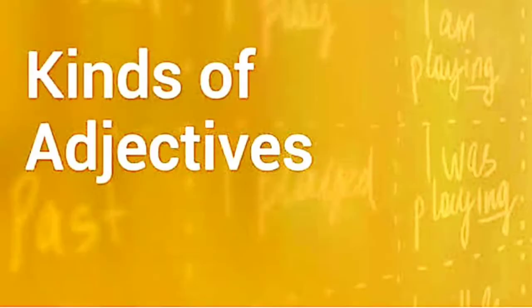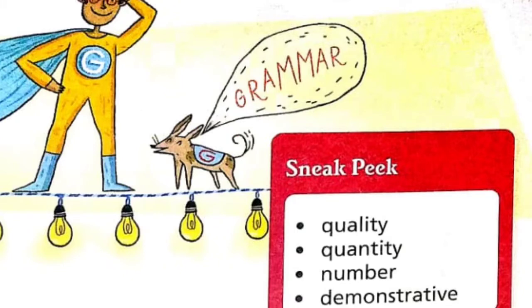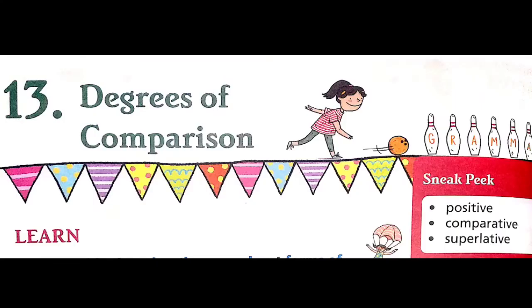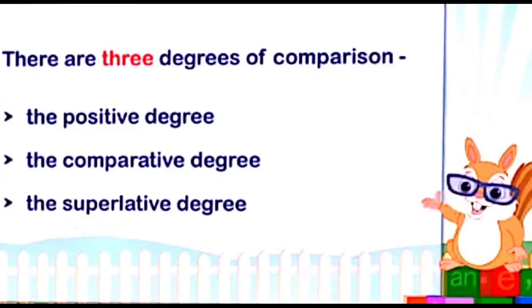In this, we studied about the four kinds of adjectives: adjectives of quality, adjectives of quantity, adjectives of number, and demonstrative adjectives. Now we are going to start with Chapter 13, that is, Degrees of Comparison. We have three degrees of comparison: positive, comparative, and superlative degrees of adjectives.